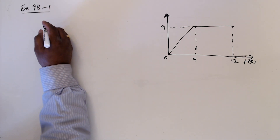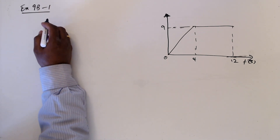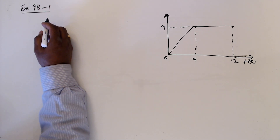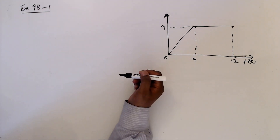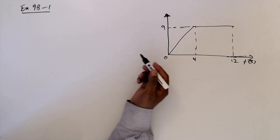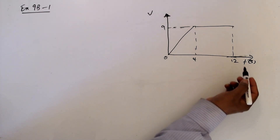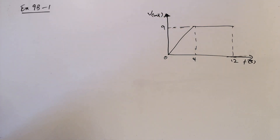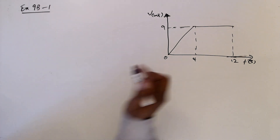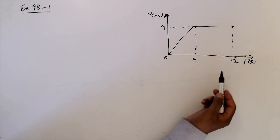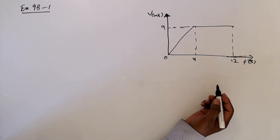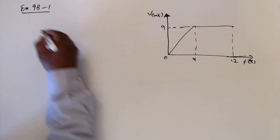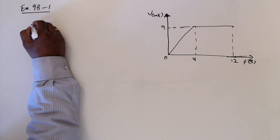The diagram shows the velocity-time graph of an athlete running along a straight track. For the first four seconds, the athlete accelerates to 9 meters per second. After that, we can see that the velocity is constant, so acceleration is zero. The first question asks for the rate at which the athlete accelerates.